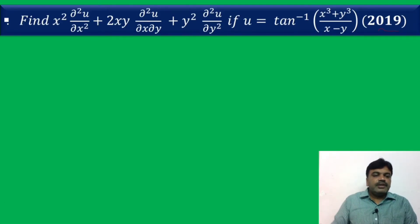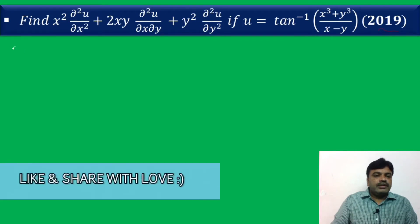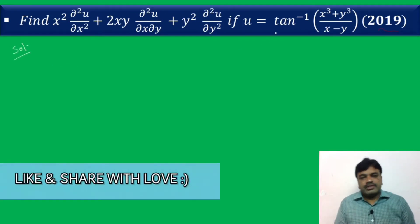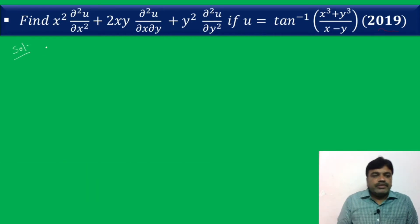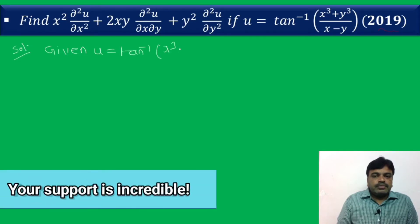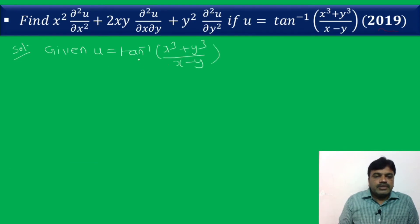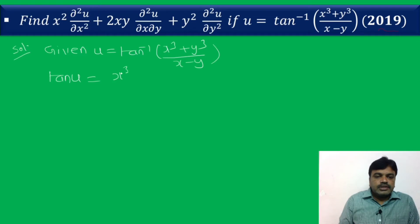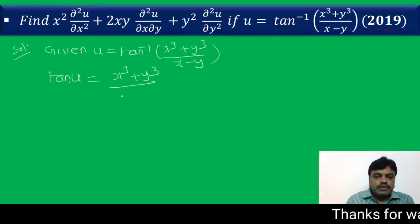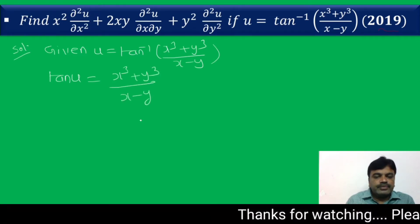In the solution, first we find the degree of the homogeneous function. Given u = tan⁻¹((x³ + y³)/(x − y)). This can be written as tan u = (x³ + y³)/(x − y).